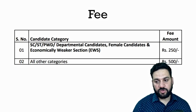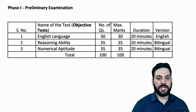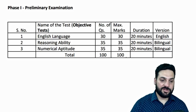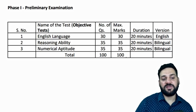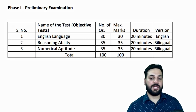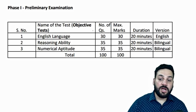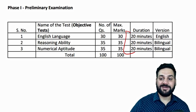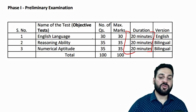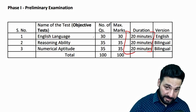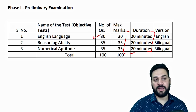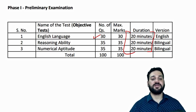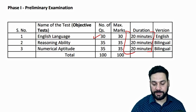The exam fee is 500 rupees. In the preliminary exam, there is English Language, Reasoning Ability, and Numerical Aptitude, with sectional timing of 20 minutes each. English Language carries 30 marks, and Reasoning and Numerical Ability carry 35 marks each.